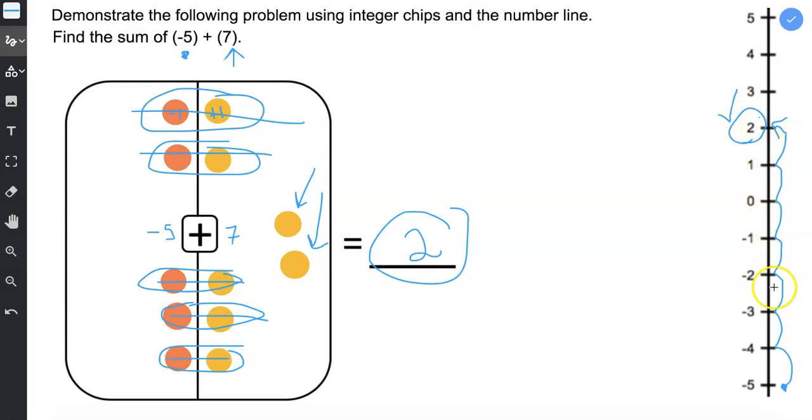So I got the answer two when I used the vertical number line. And I also got the answer two when I modeled using the integer chips.